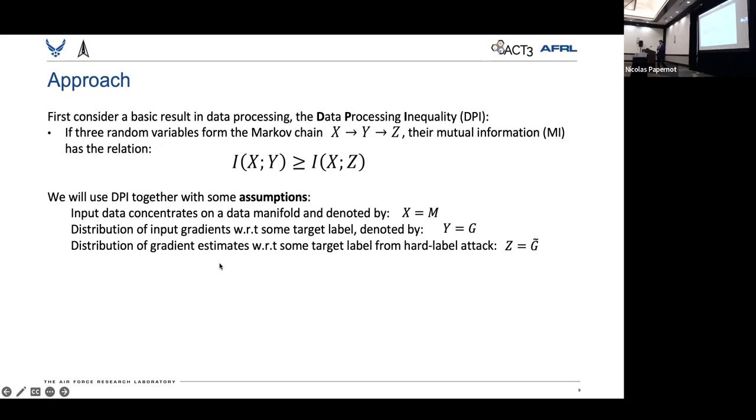And lastly, we assume that there's a distribution of gradient estimates coming from the hard-label attack. And so this is also true because we know that hard-label attacks will try to traverse the search space to find that target label. And so instead of Z, we'll denote by G tilde.